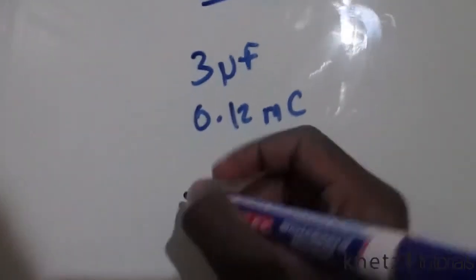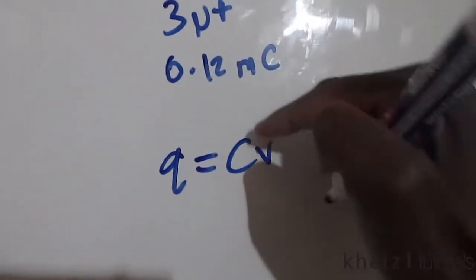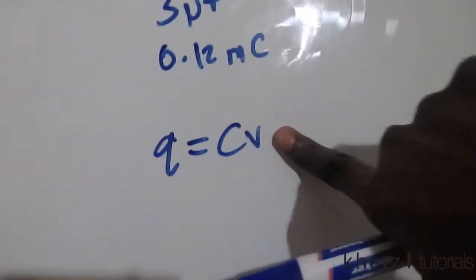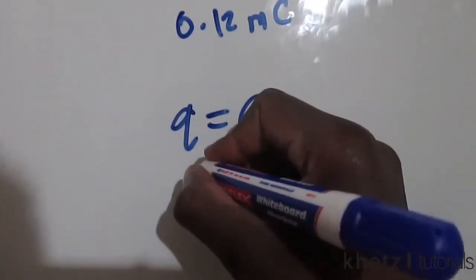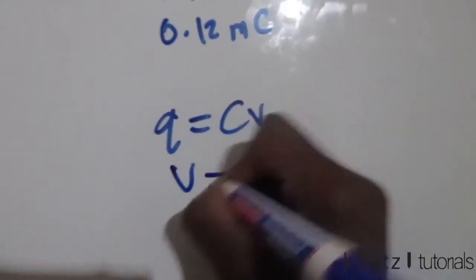We're going to use this formula which says charge equals CV, where C is capacitance and V is voltage. We are looking for voltage in the first part, so V equals Q divided by C.